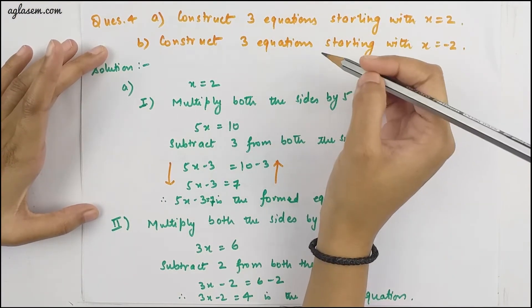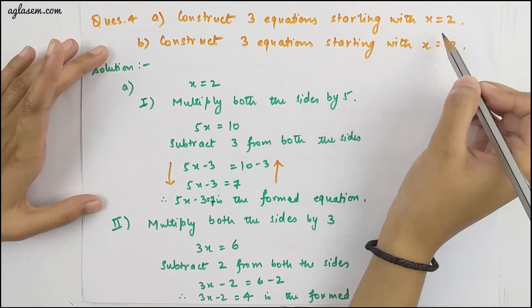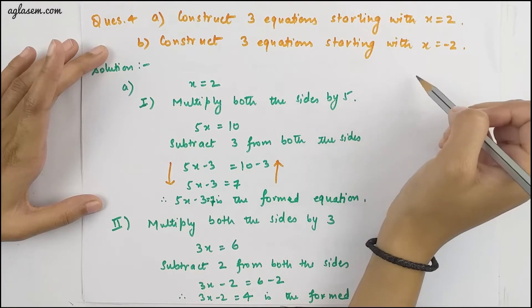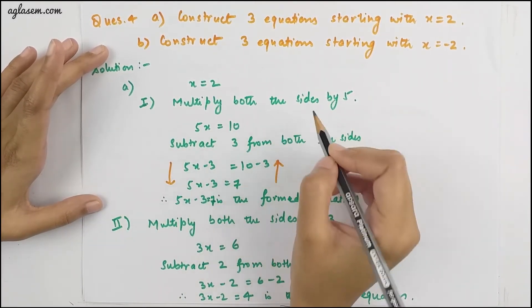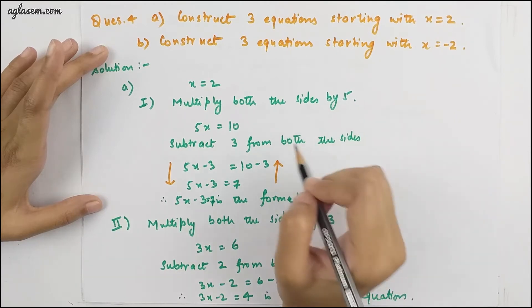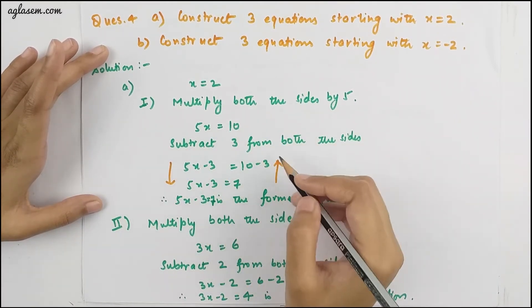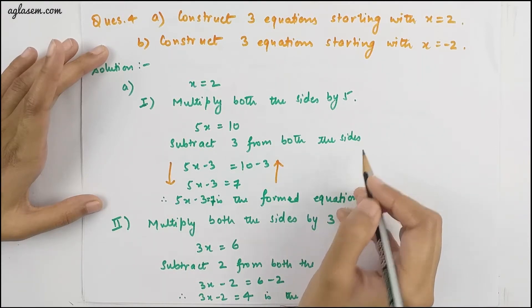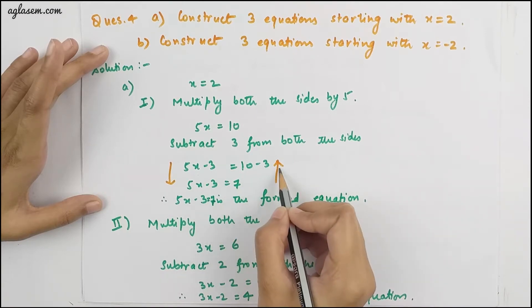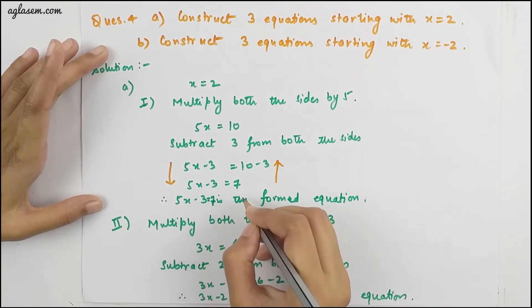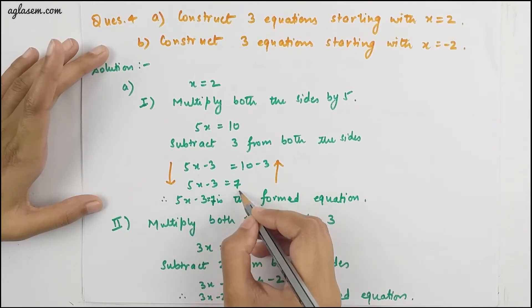The first part of question 4 is: construct three equations starting with x = 2. First equation: multiply both sides by 5, giving 5x = 10. Then subtract 3 from both sides: 5x − 3 = 10 − 3. So the equation 5x − 3 = 7 is formed.